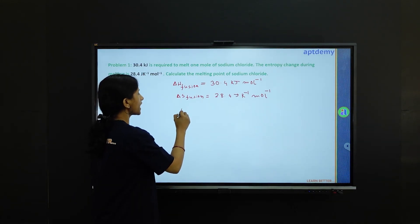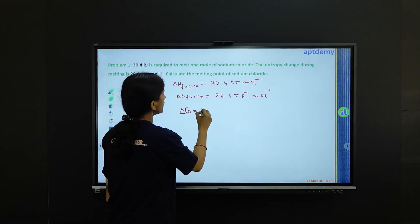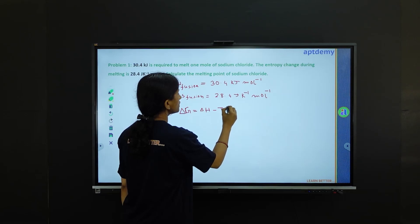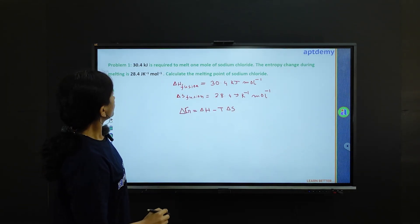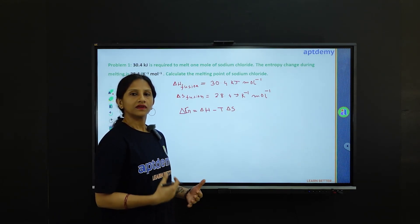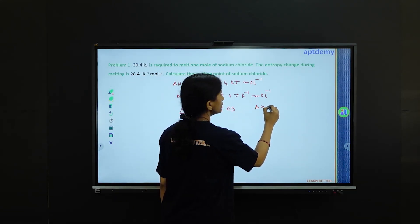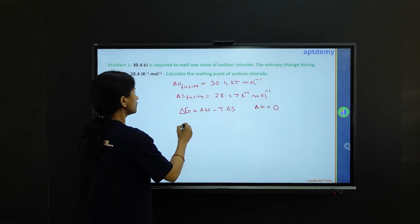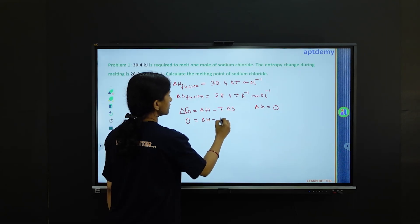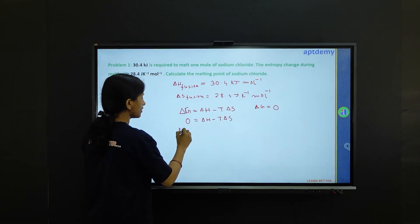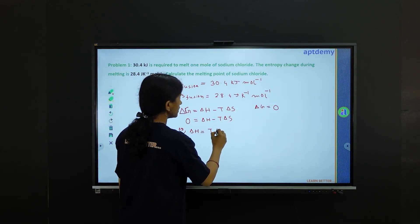We know that delta G is equal to delta H minus T delta S. Because this is a phase change process, for a phase change delta G is equal to 0. So we can write: 0 = delta H minus T delta S, or delta H is equal to T delta S.